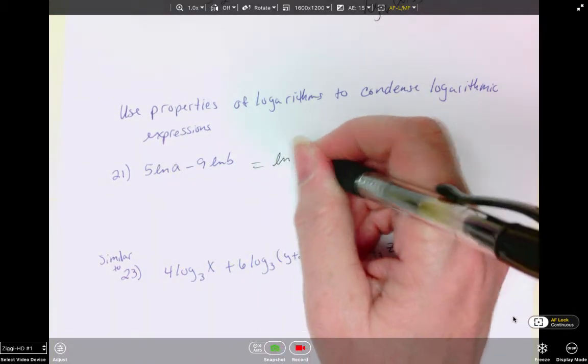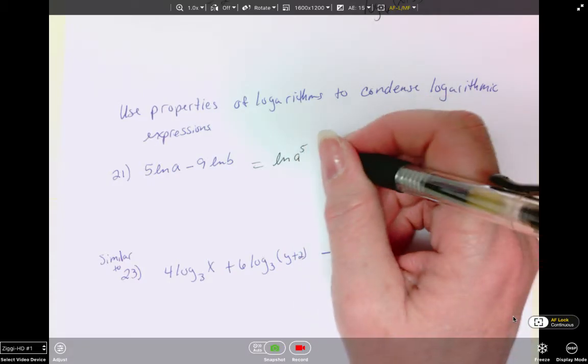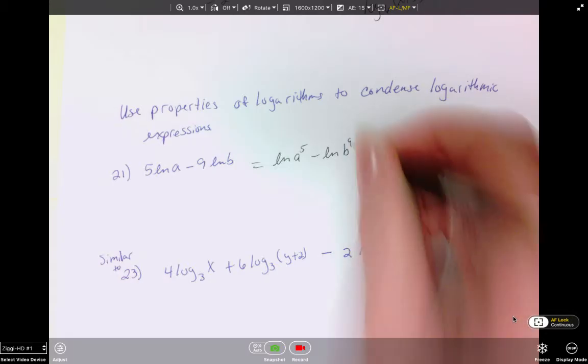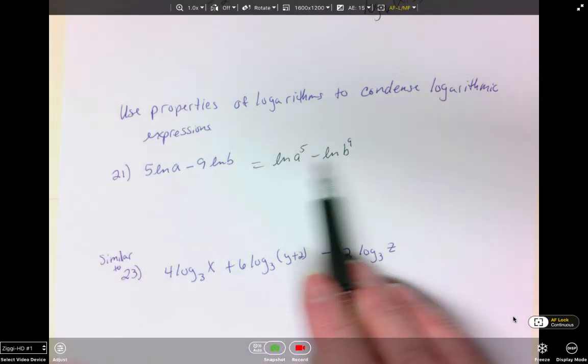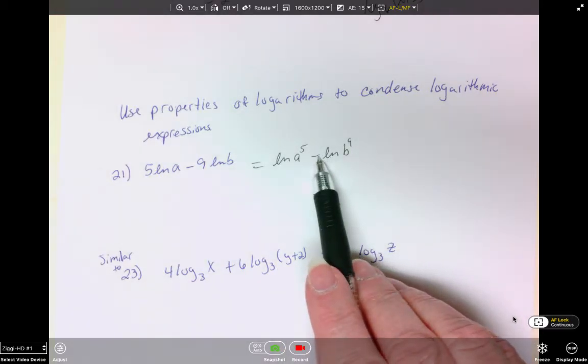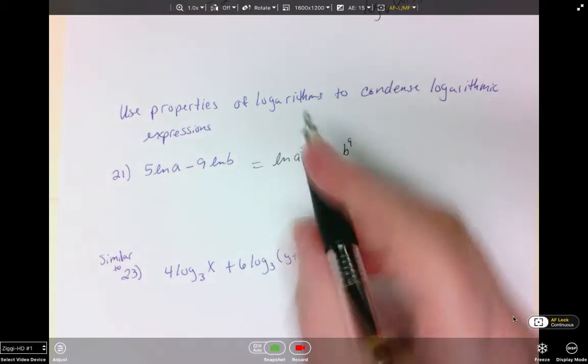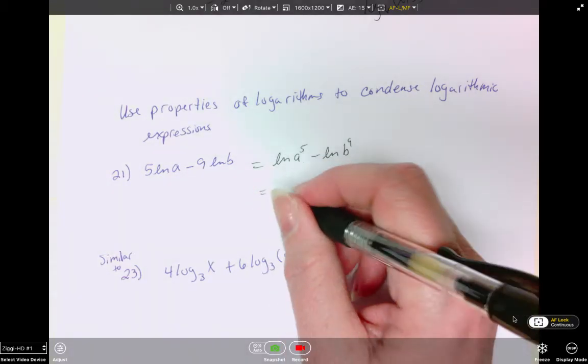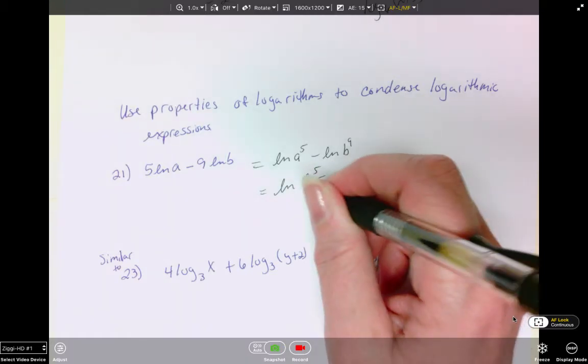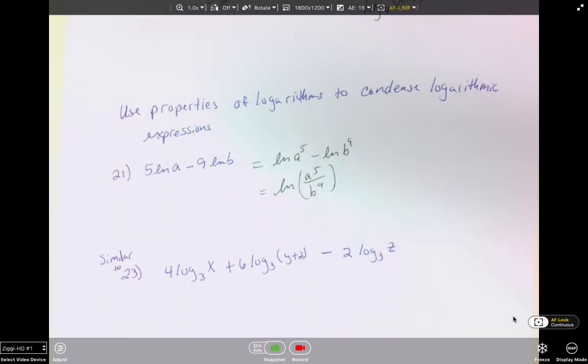So this will be ln of a to the 5th minus ln of b to the 9th. Now these aren't exactly like terms, but they are both ln's. Because of that, we can put them together. This subtraction tells us it will become division. So this will be the ln of a to the 5th divided by b to the 9th. And then you're done.